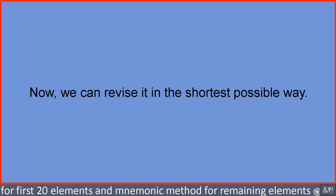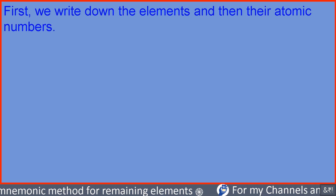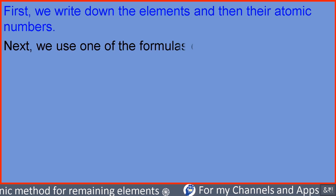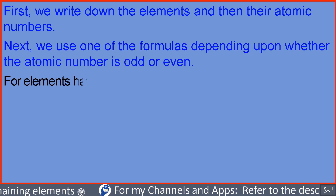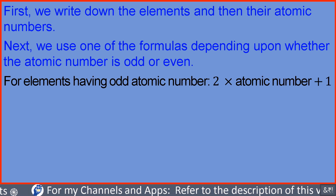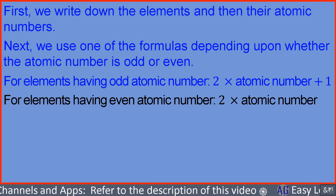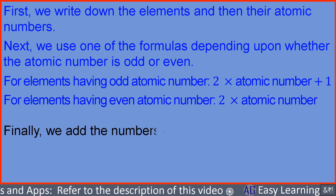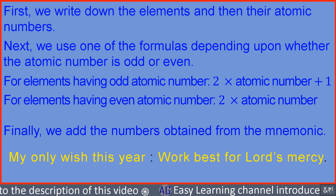Now we can revise it in the shortest possible way. First, we write down the elements and then their atomic numbers. Next, we use one of the formulas depending on whether the atomic number is odd or even: for odd atomic numbers, 2 multiplied by the atomic number plus 1; for even atomic numbers, 2 multiplied by the atomic number. Finally, we add the numbers obtained from the mnemonic — My only wish this year, work best for Lord's mercy.